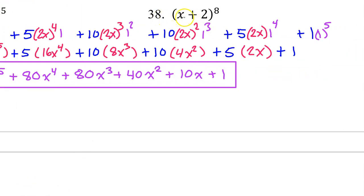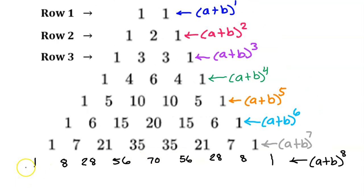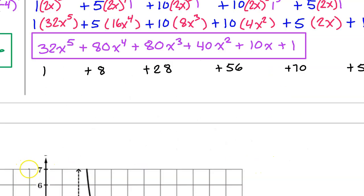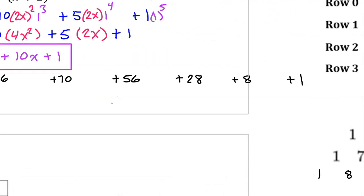For number 38, we have a binomial raised to the eighth power. I'm going to need an extra row on my chart here, so this is going to be 8 and 28 and 56, 70, and so on. So I need to copy these coefficients over. Okay, this goes off the screen, but there you go.